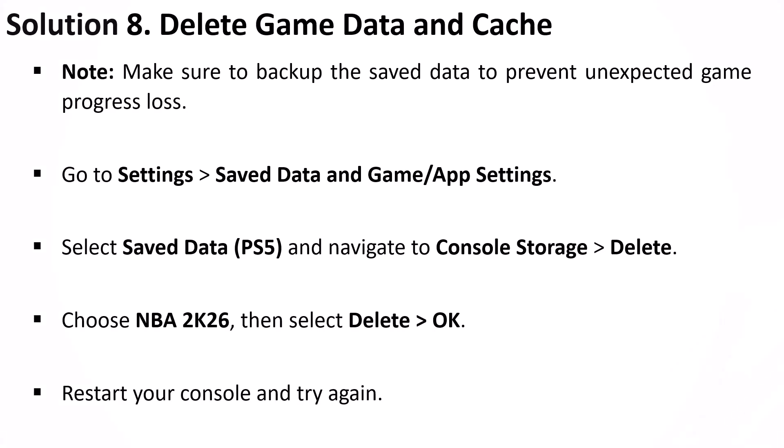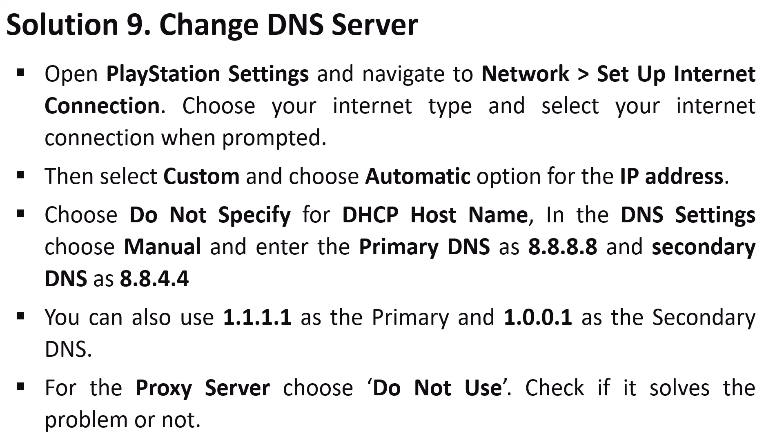Solution 9 is to change the DNS server. Open PlayStation Settings, navigate to Network, Setup Internet Connection. Choose your internet type, select your connection, then select Custom. Choose Automatic for IP address, Do Not Specify for DHCP hostname. In DNS settings, choose Manual and enter 8.8.8.8 in the Primary DNS and 8.8.4.4 in the Secondary DNS. For proxy server, choose Do Not Use. Launch the game and check. If it doesn't work, try Primary DNS 1.1.1.1 and Secondary DNS 1.0.0.1.